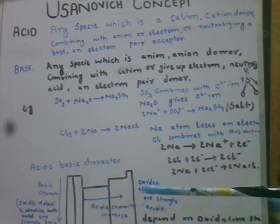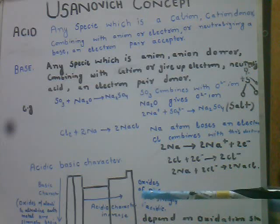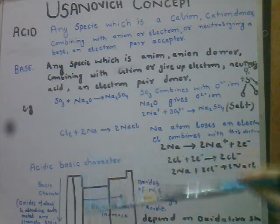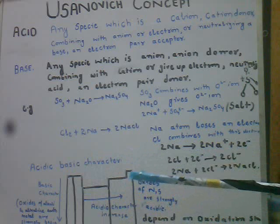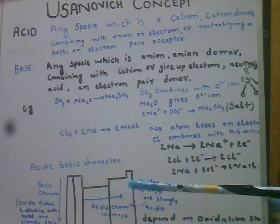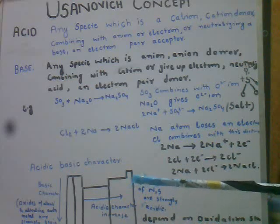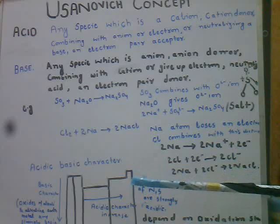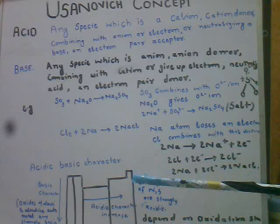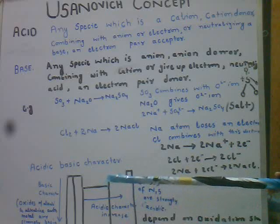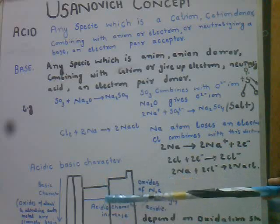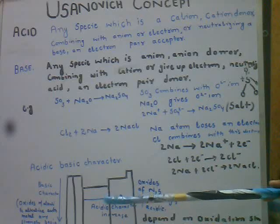Acidic aur Basic strength ke trends: Group IA aur Group IIA mein top to bottom basic character increase hota hai, kyunki ionization energy down the group decrease hoti hai — kam energy required hoti hai ek electron remove karne ke liye. Is wajah se metallic oxides ki basic strength top to bottom increase hoti hai.